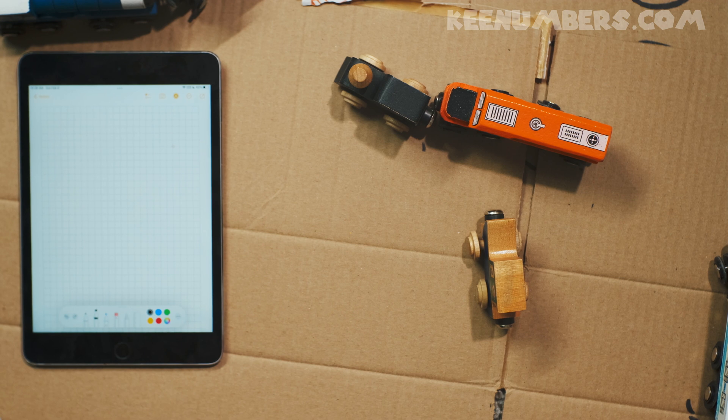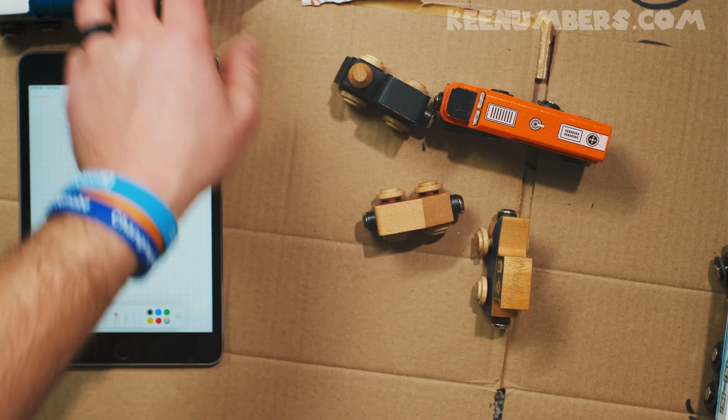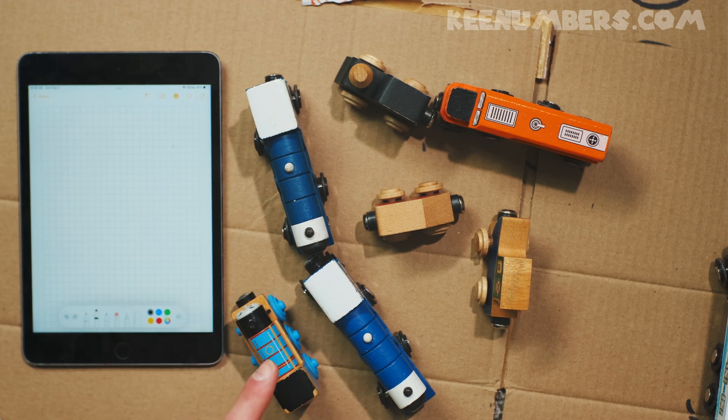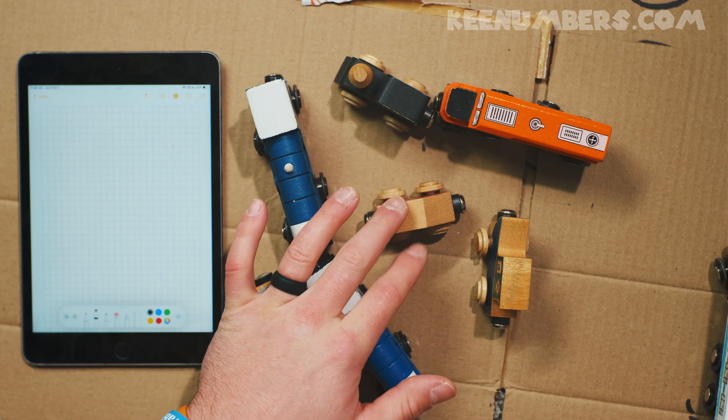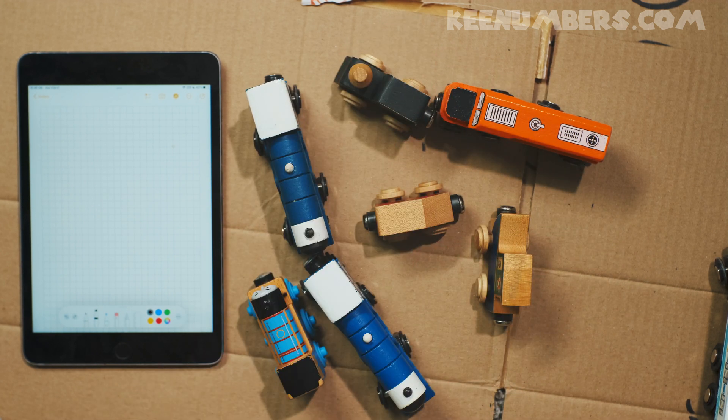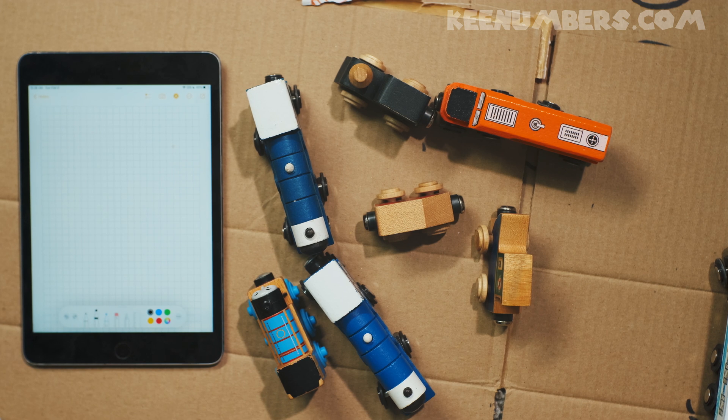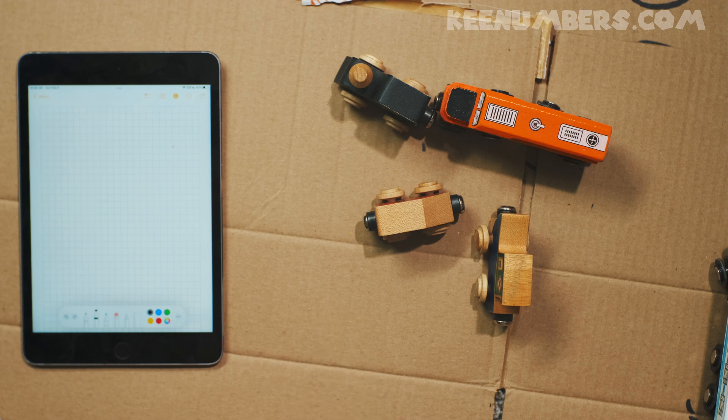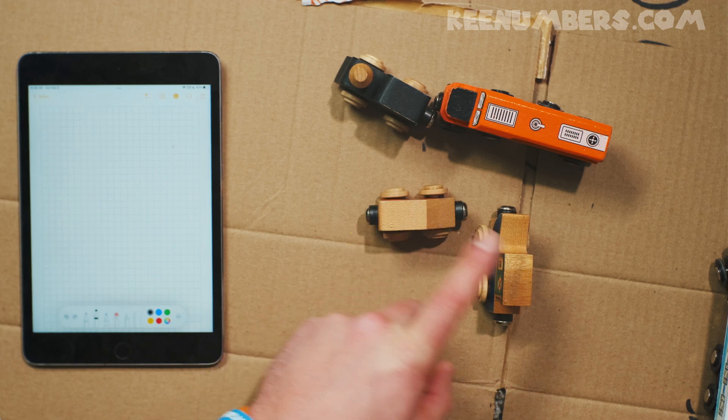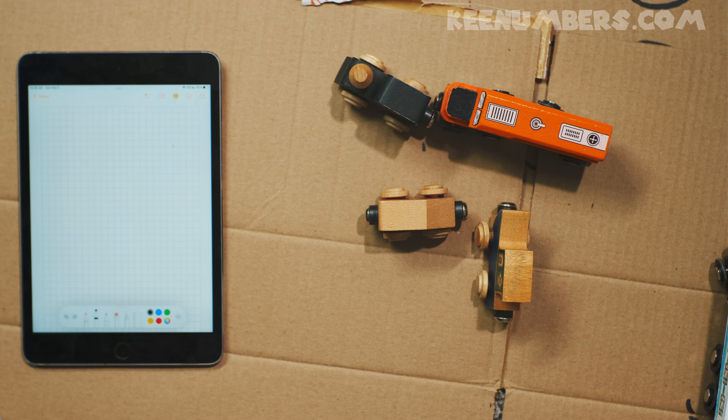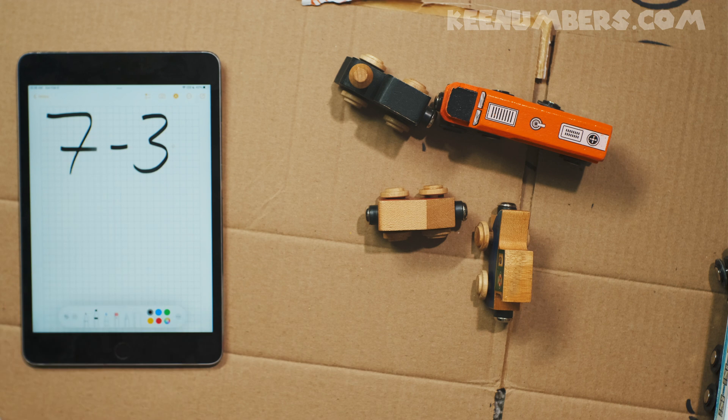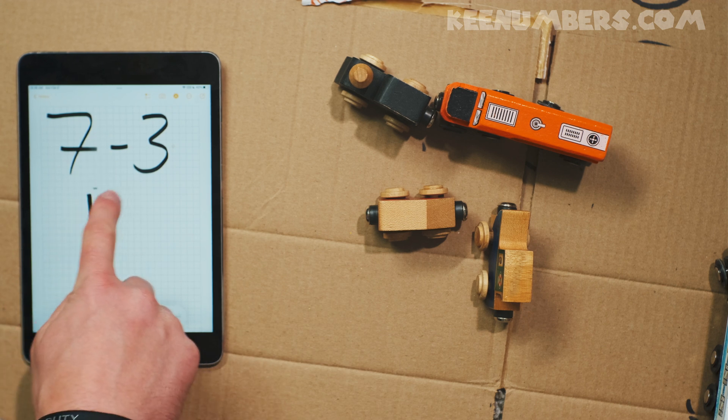Three train cars. But what if we have seven train cars? One, two, three, four, five, six, seven. If you have seven train cars and you take away three, how many are left? Seven minus three is one, two, three, four. Four train cars. Seven minus three is four.